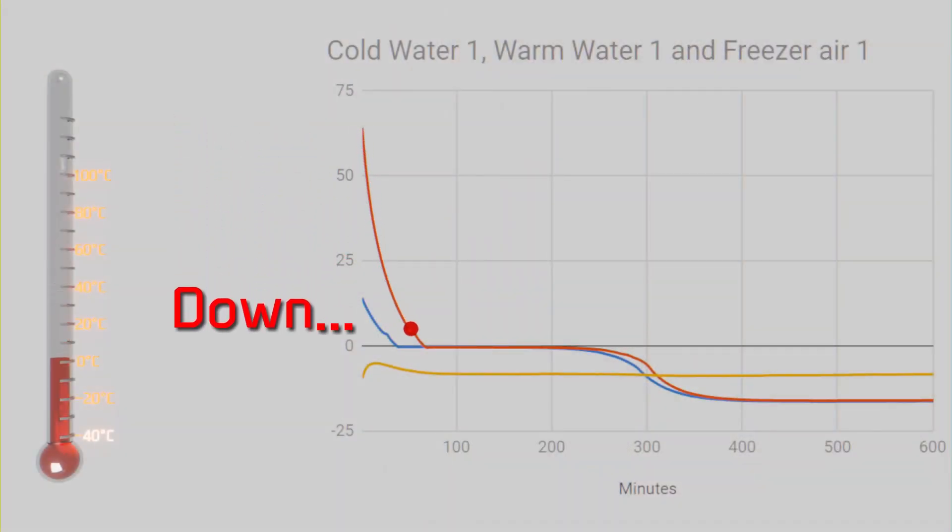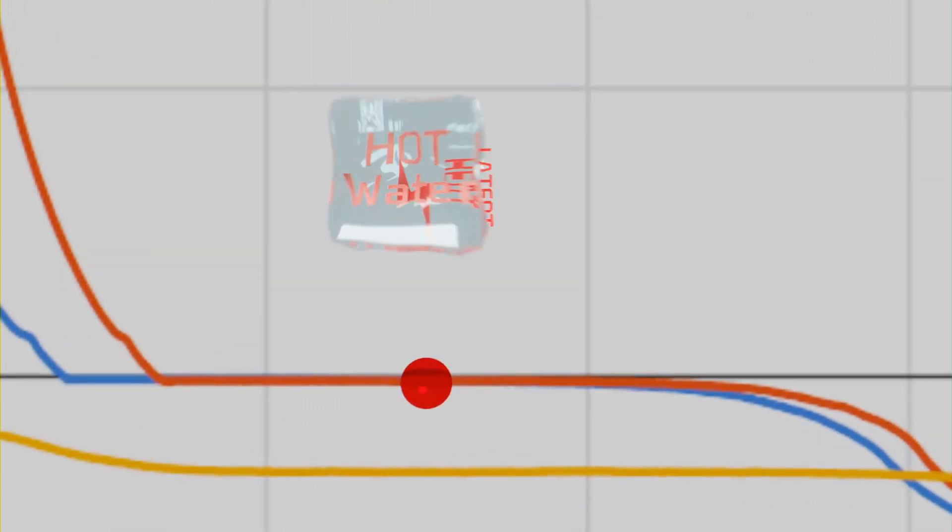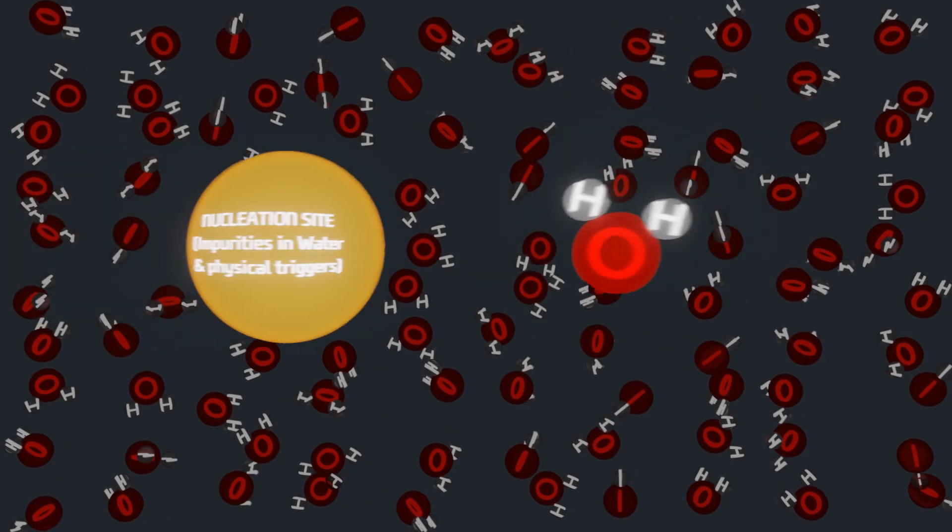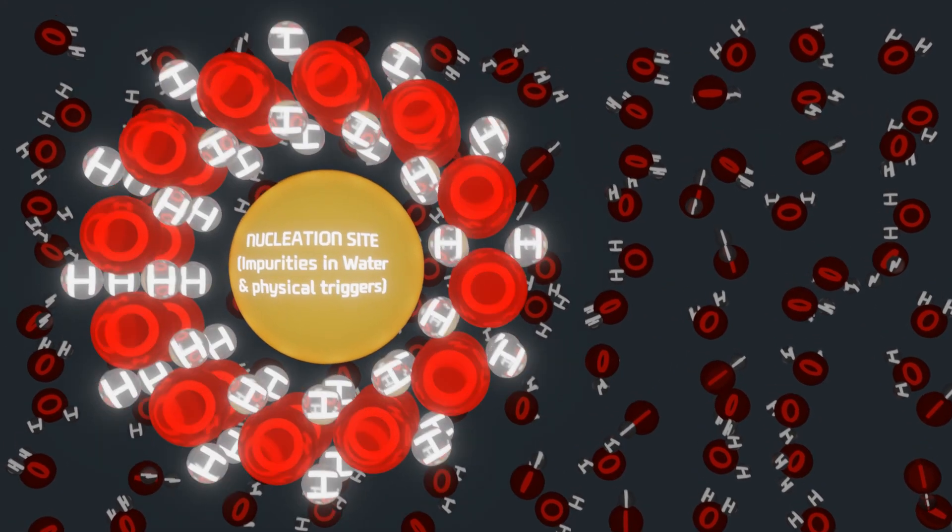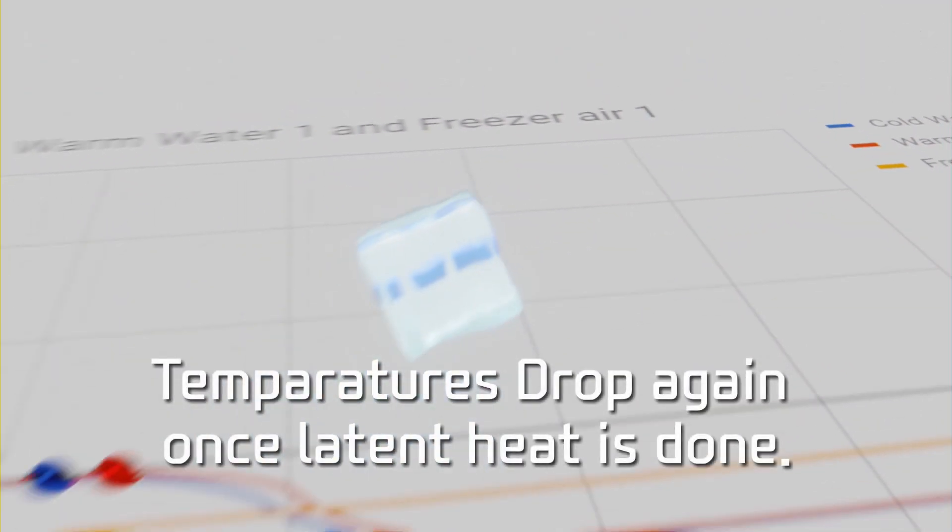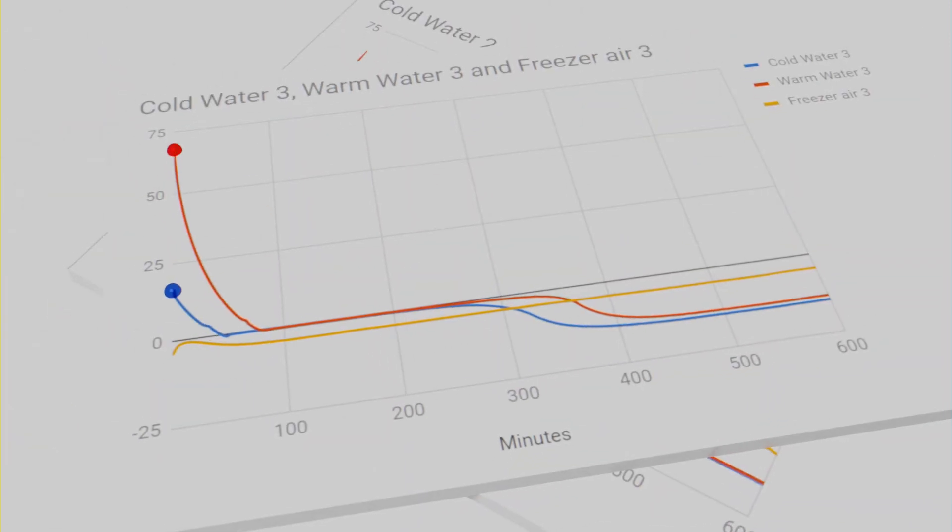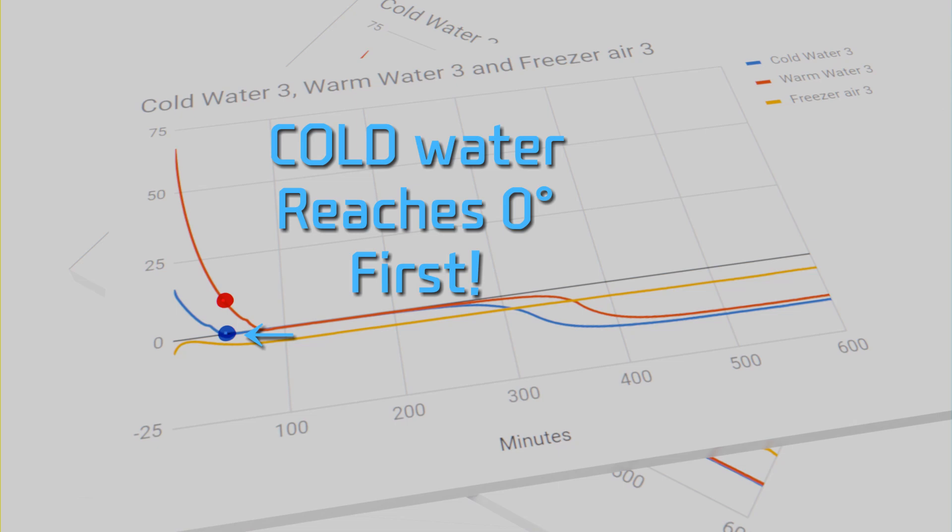During this pause, latent heat—a form of energy—is spent to let ice crystals grow around random nucleus or nucleation sites. Only after fully becoming solid do temperatures start to drop again. However, the cold water always reached zero before hot water, just as Newton's law of cooling stated. Nothing special—is the Mpemba effect a lie?